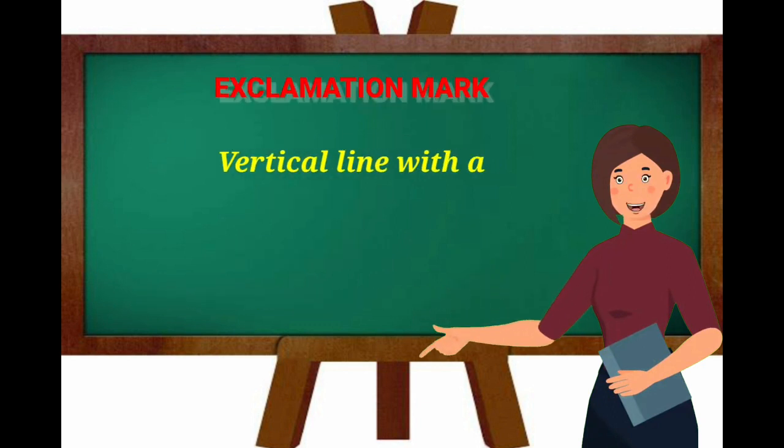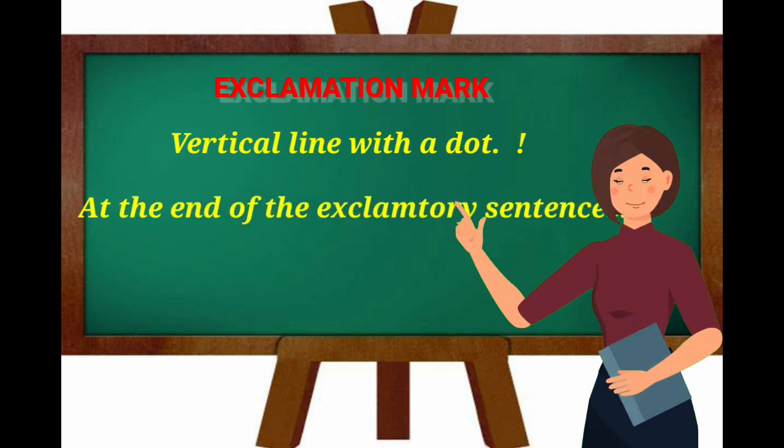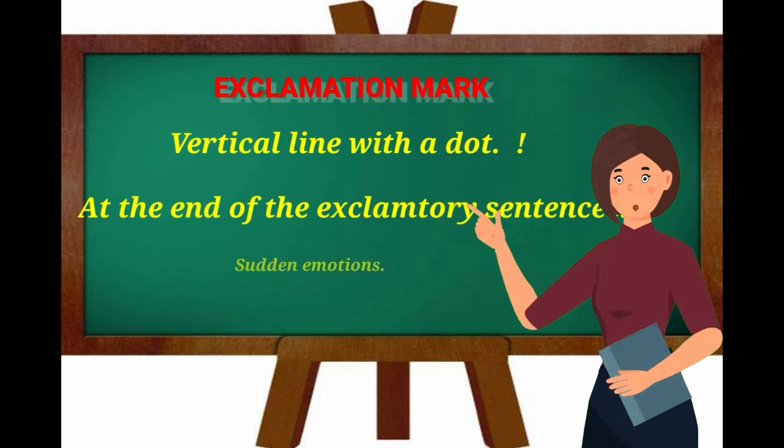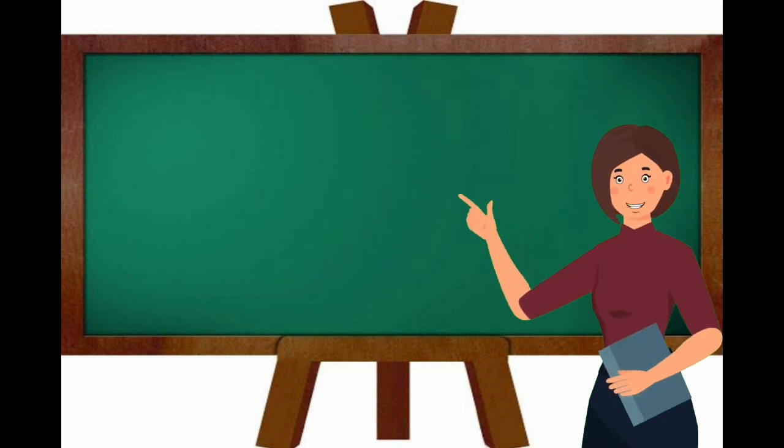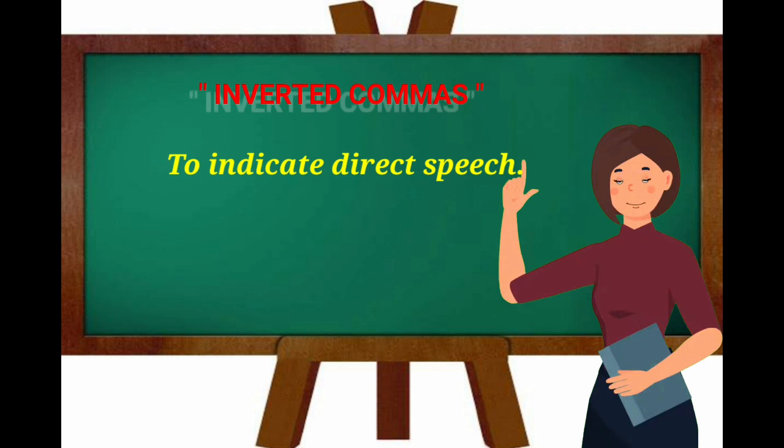A vertical line with a dot is the exclamation mark. It is used at the end of exclamatory sentences. The writer or the speaker here is either wondering about something or puzzled or is in a shock. Next, inverted commas. We use inverted commas to separate quotes or the actual words spoken by the speaker in a sentence. These are also used to emphasize something in the sentence.